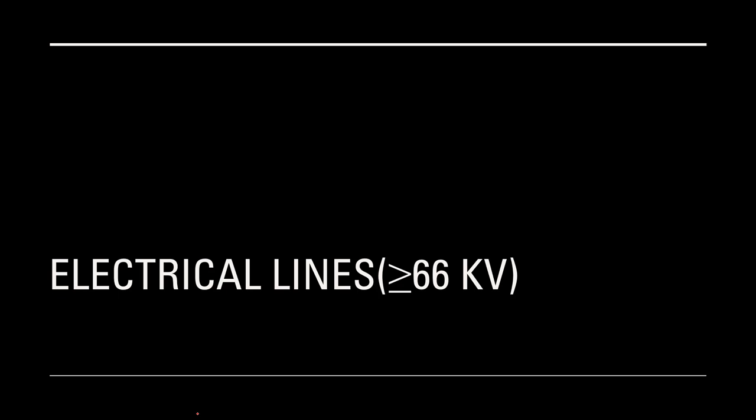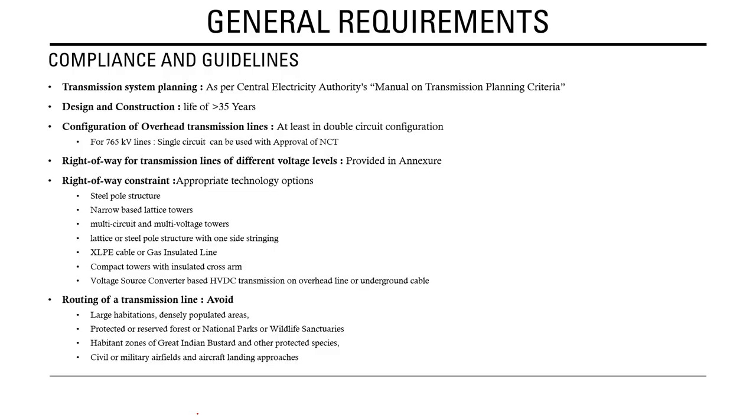For electrical lines, there is Part A covering 66 kV and above voltage levels, and Part B for distribution lines below 66 kV — that is 33 kV, 11 kV and below. We will focus on 66 kV and above, which is the sub-transmission and transmission system. What are the compliance guidelines provided for 66 kV and above transmission lines?